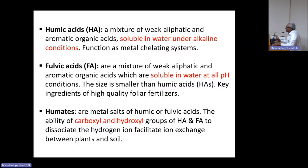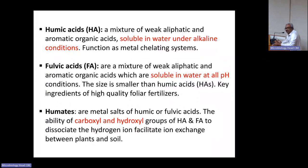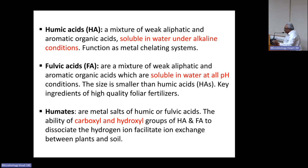Humic acid can be differentiated in that it is soluble in water under alkaline conditions and has the ability to chelate metal ions. Fulvic acid, on the contrary, is again a mixture of aliphatic and aromatic compounds, but it is soluble in water at all pH — this is the key difference. Fulvic acid has a comparatively smaller molecular weight and has a yellow color, whereas humin has no color and is colorless.